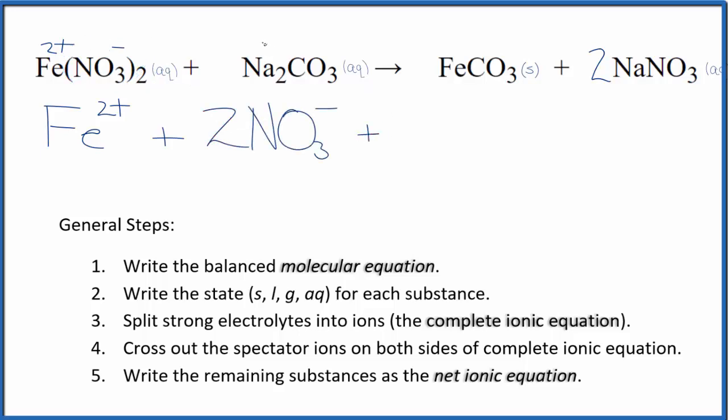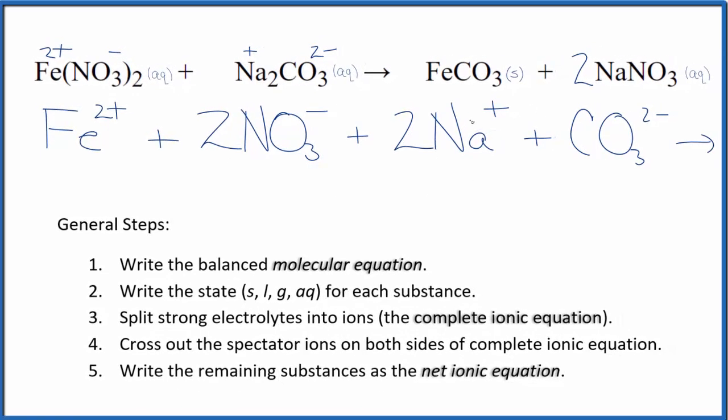sodium, that's in group 1, so that'll be 1 plus, each one of them, and the whole carbonate, 2 minus. So we have 2 of those sodium ions, and then we have our carbonate ion. So these are the reactants in our net ionic equation.